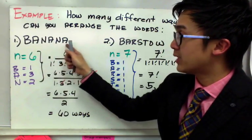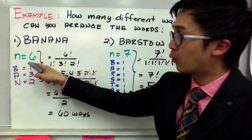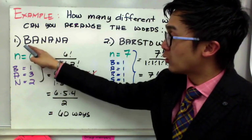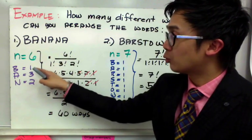1, 2, 3, 4, 5, 6. And 6 will be our n. Now, our letters repeat. So for B, there's only one B, so we only have one for B.